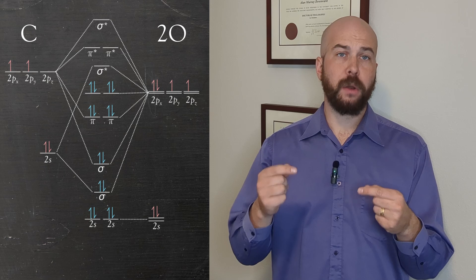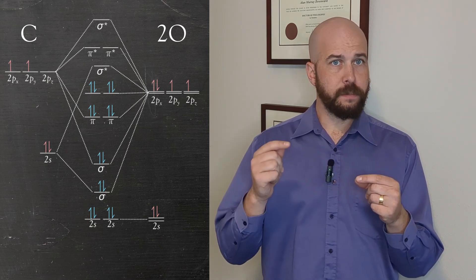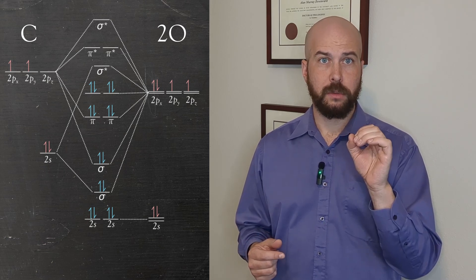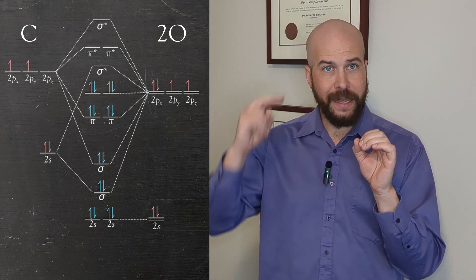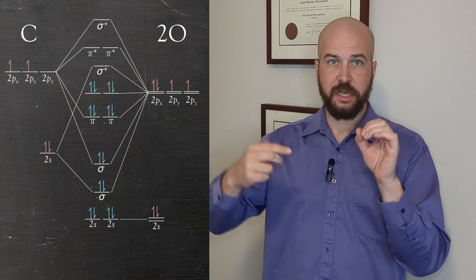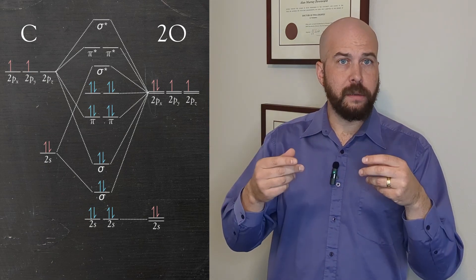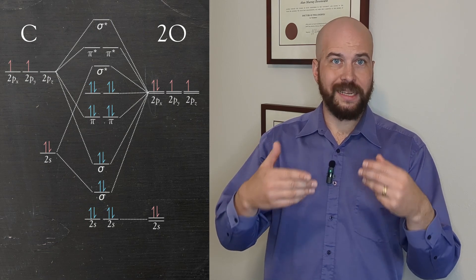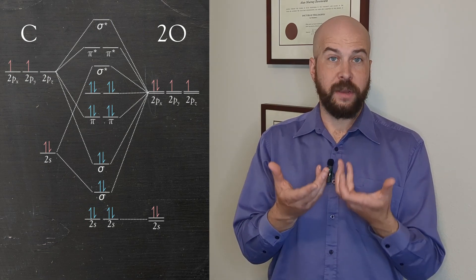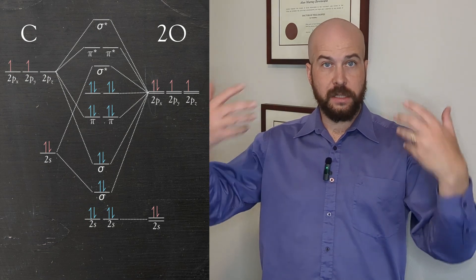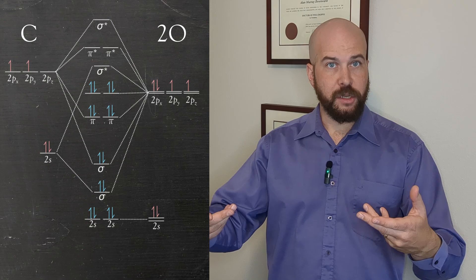So our first bonding interaction is going to be between the carbon atom's 2s orbital and the 2p orbitals of the oxygen that point directly towards it. This will generate a sigma type bond. It is cylindrically symmetrical. And if we have that interaction out of phase well then it will generate a sigma star antibonding interaction.